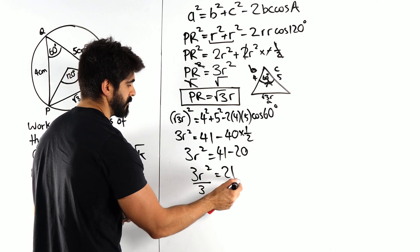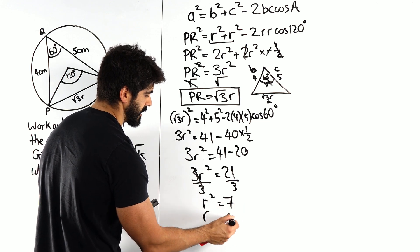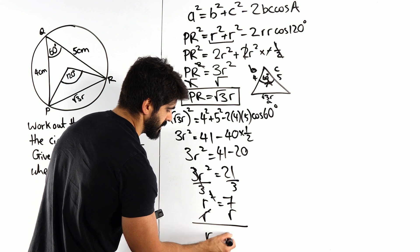Rearranging, we're going to divide by 3 on both sides. r squared is 7, and then we root both sides to get r. r is root of 7.